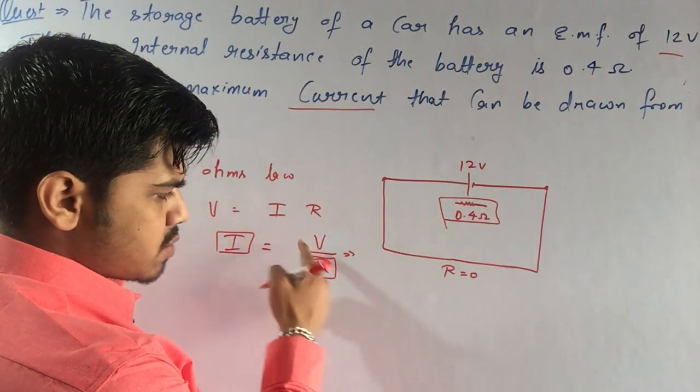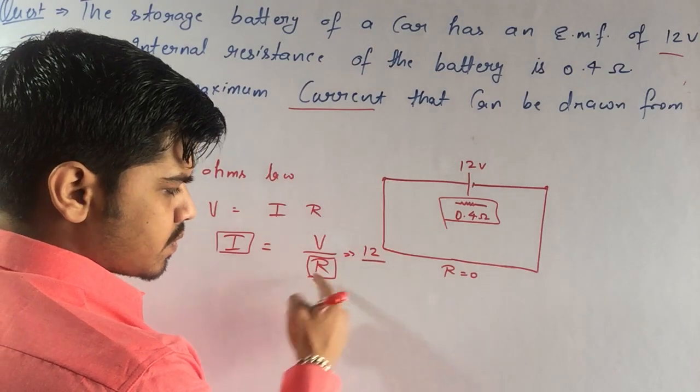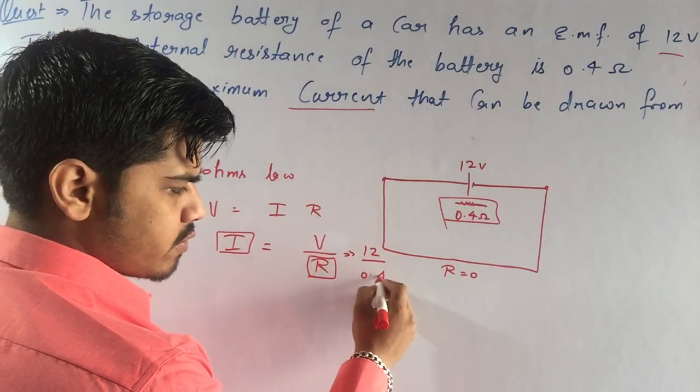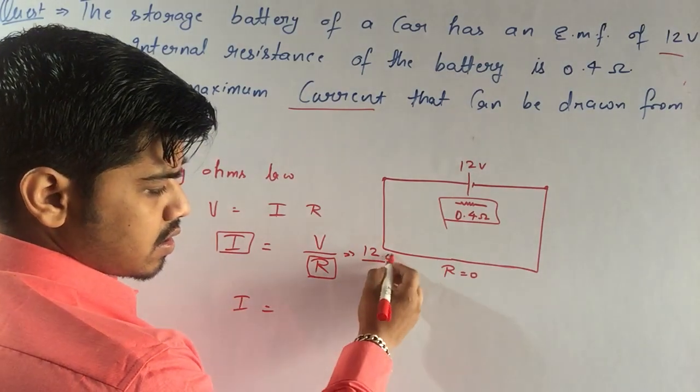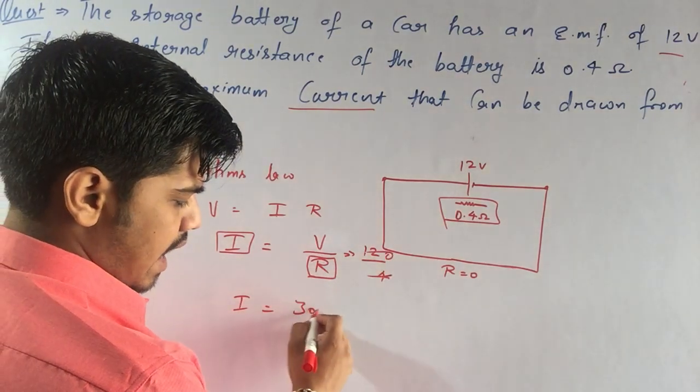It means with a potential of 12 volts and resistance of 0.4 ohm, the current is 30 ampere.